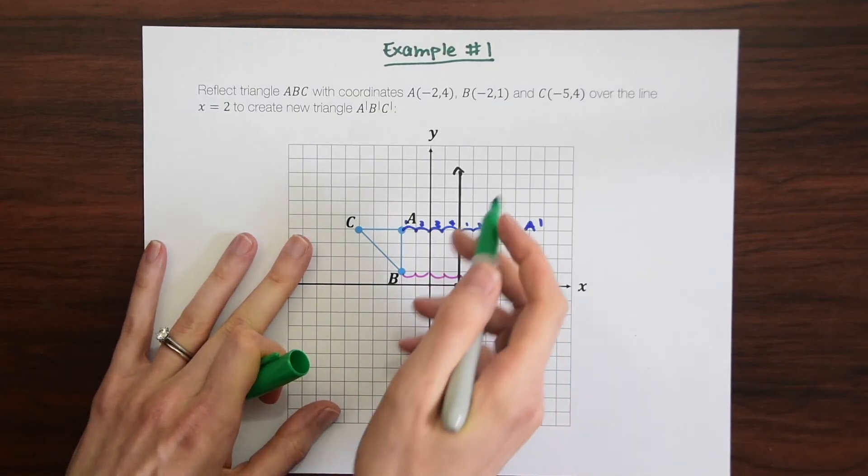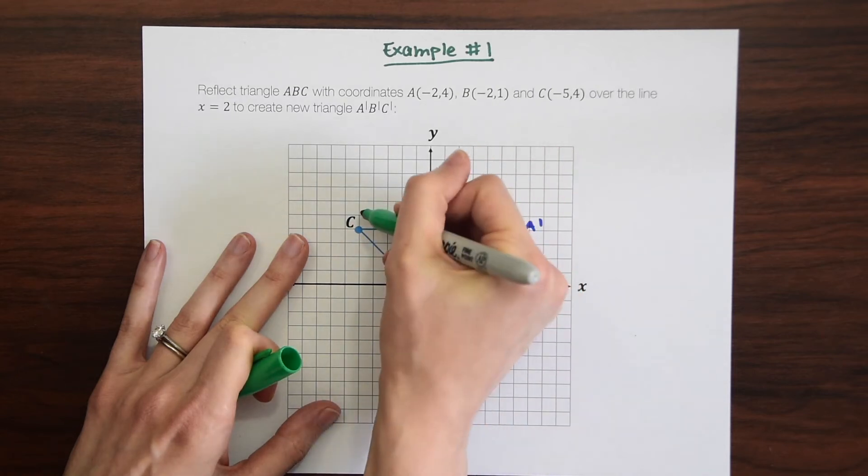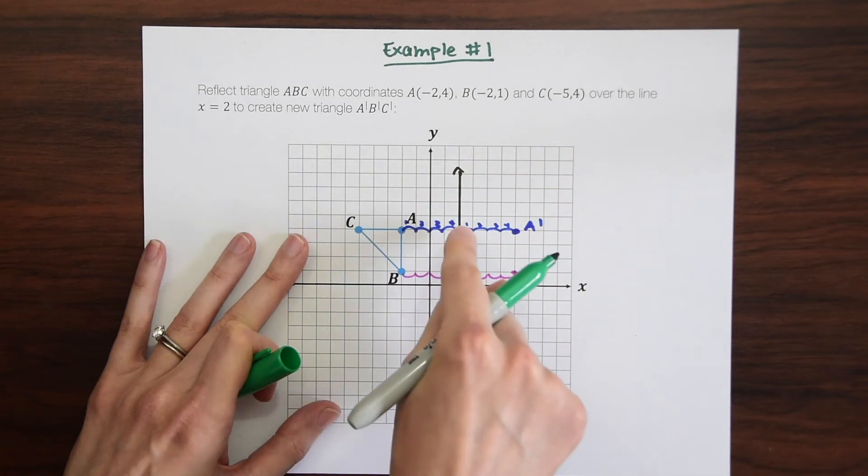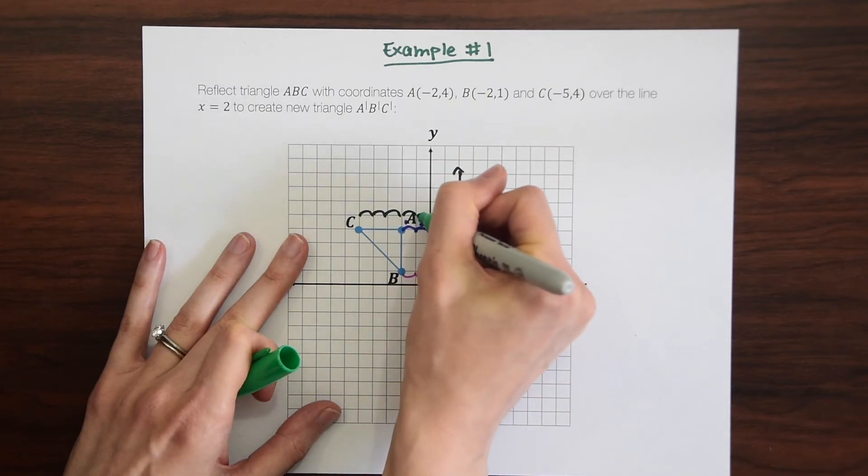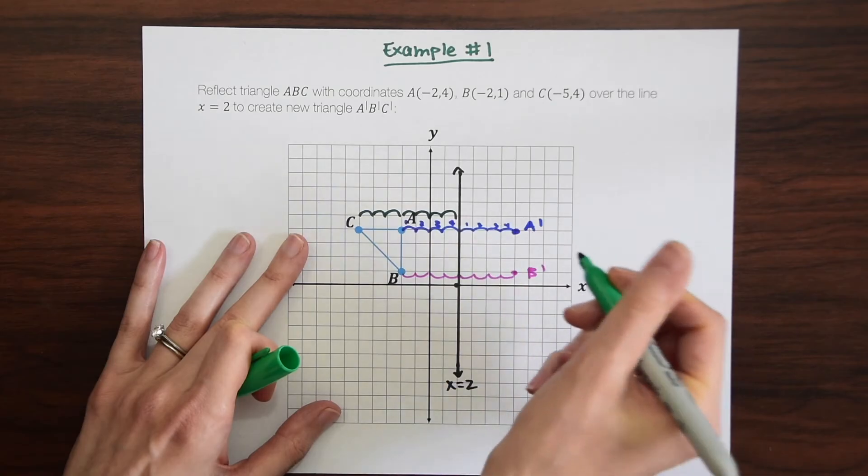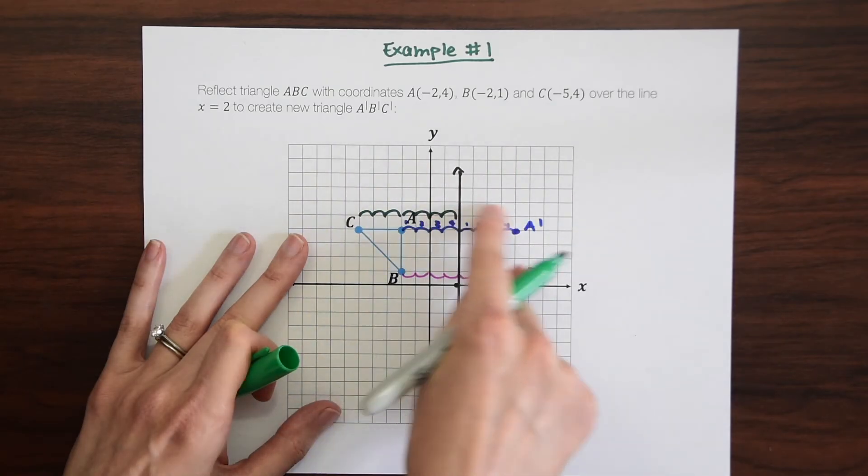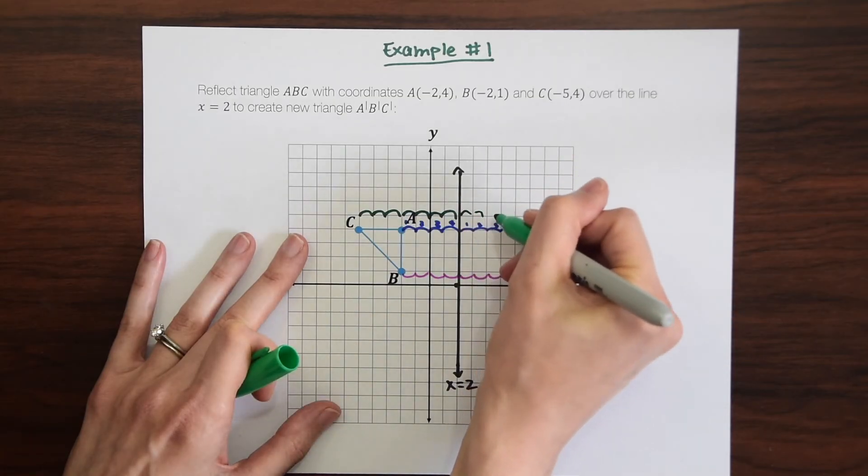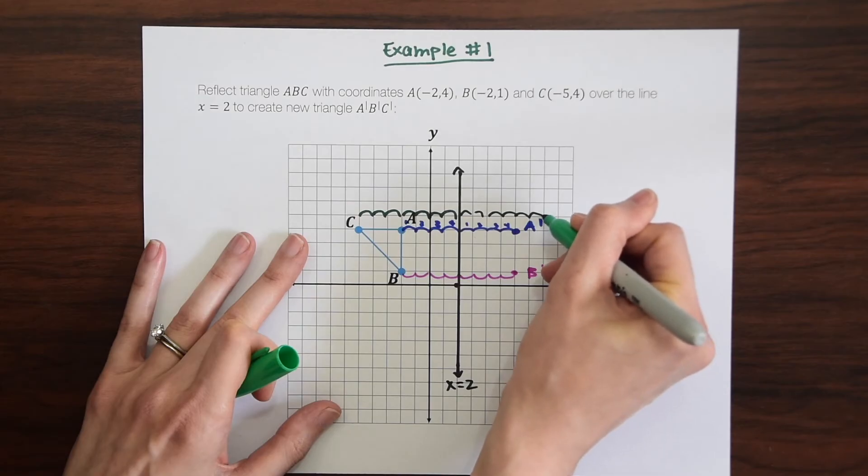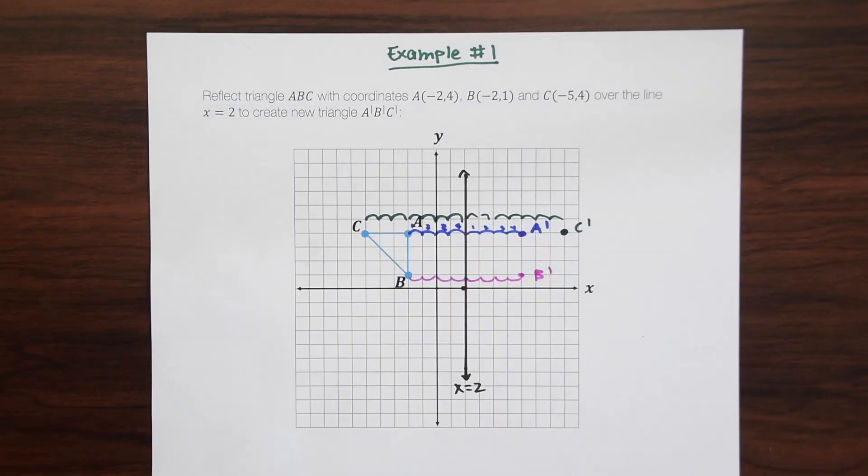And lastly, we have C. I'm going to measure up here just so we can see it more clearly. So let's measure the distance between C and line x equals 2. So we have 1, 2, 3, 4, 5, 6, 7. So that's 7 units away from line x equals 2. So now we've got to go 7 units on the other side. 1, 2, 3, 4, 5, 6, 7. And we're going to put a dot. And now we can connect our dots.